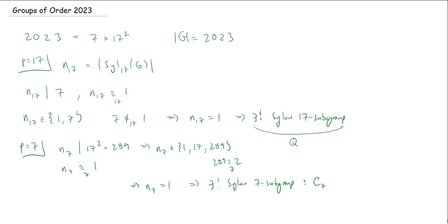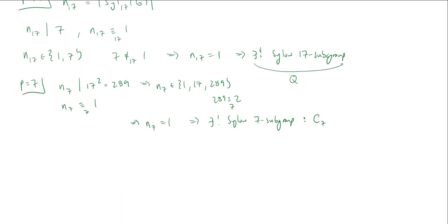So we now know that the group G has a unique cyclic group of order 7, and it has a unique Sylow 17 subgroup. This will have order 289. But because they're unique, that tells you that they're normal in G. So C_7 is a normal subgroup of G, and this Q is a normal subgroup of G. This is by the uniqueness of their orders.